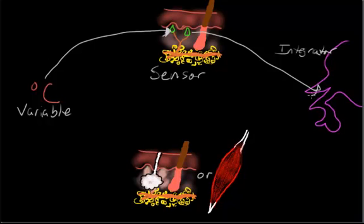then it's going to talk to one effector. In this case, that effector is going to be some eccrine sweat glands.